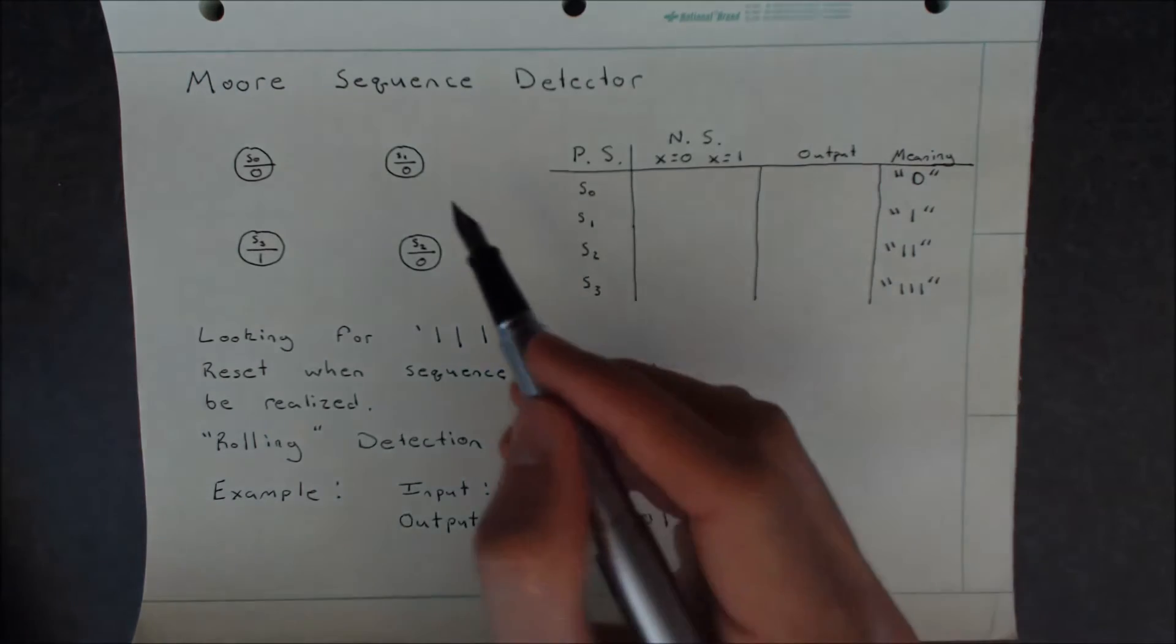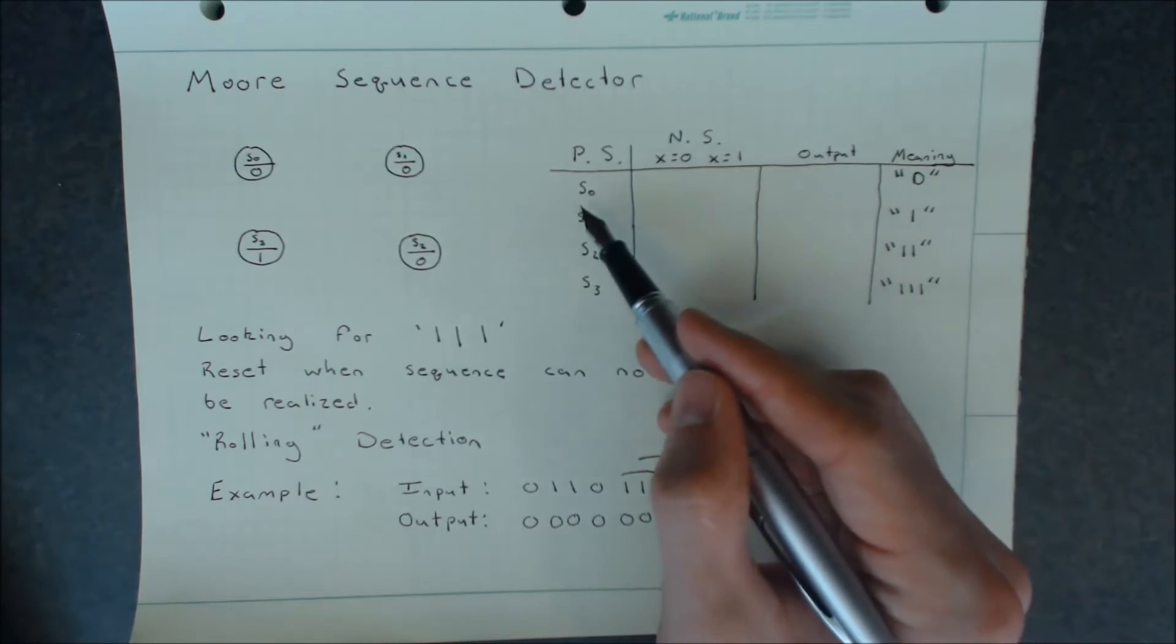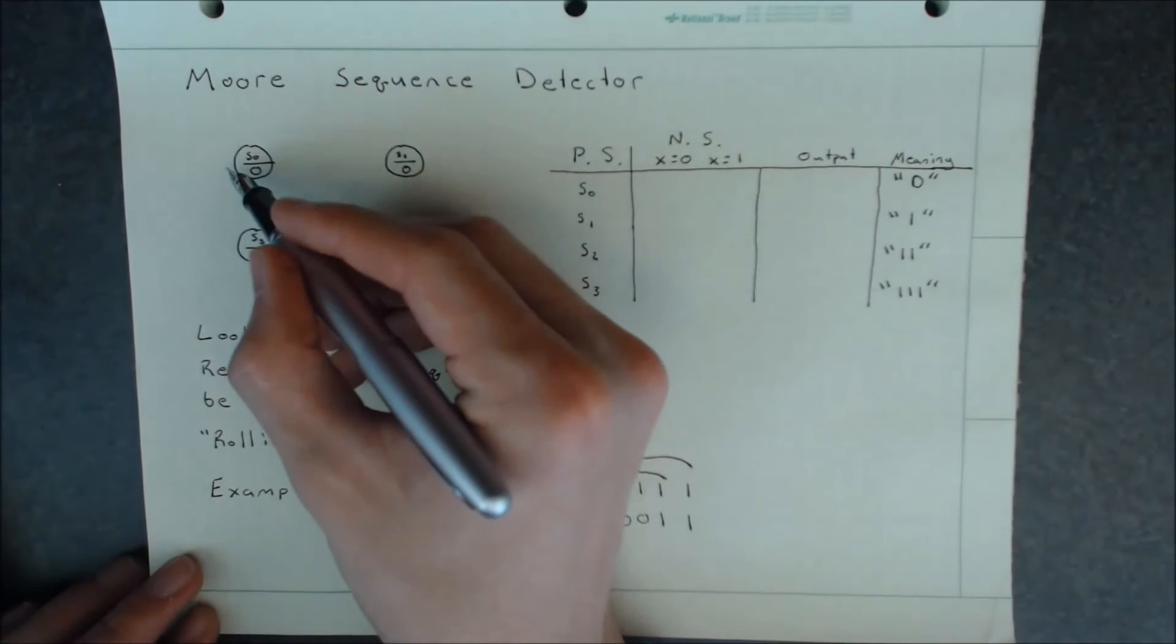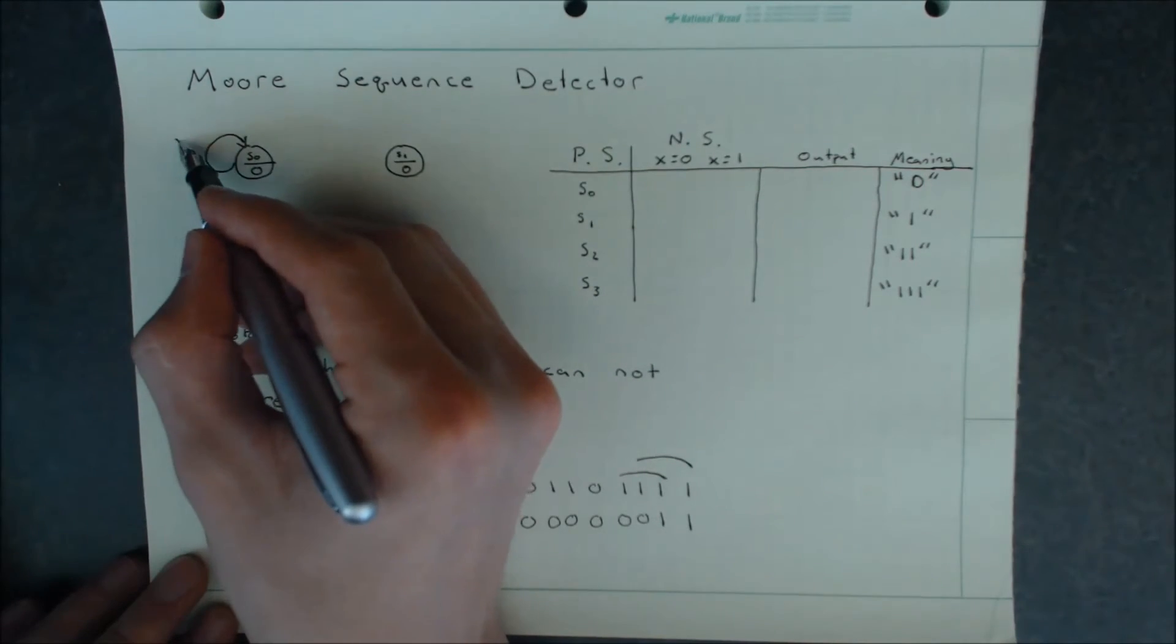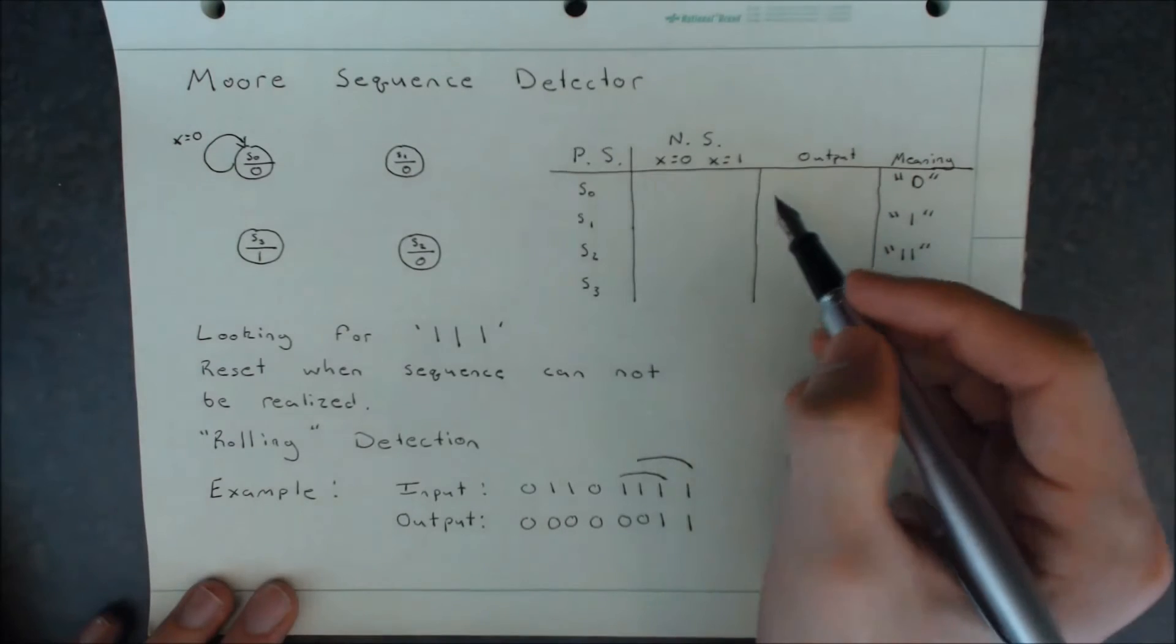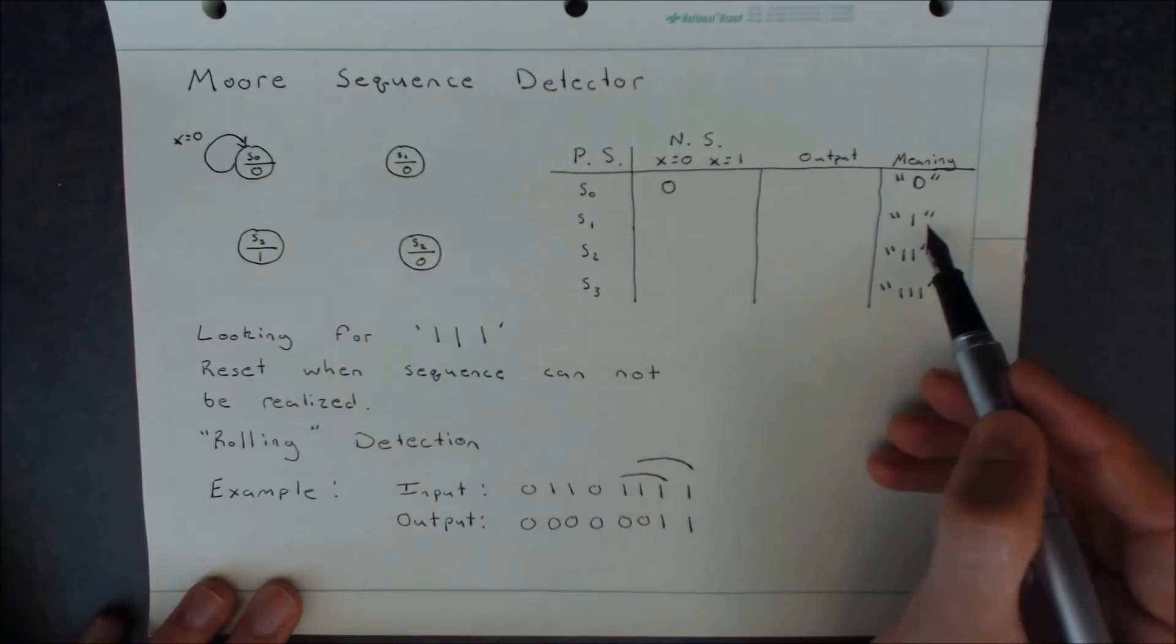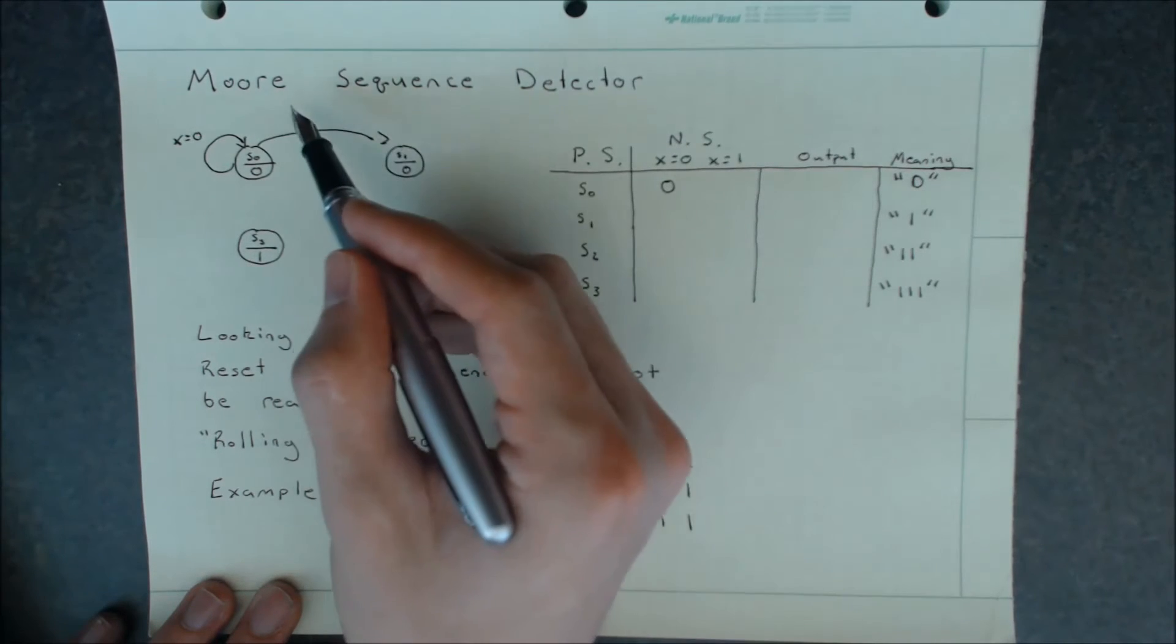If we get started, we have to first define what happens when we receive another 0 when we're in S0, which is our reset state. If we receive another 0, we'll simply stay in S0. We haven't gotten any closer to reaching the target of 1, 1, 1. However, if we receive a 1, we have gotten closer to 1, 1, 1, and we'll actually change to S1 on the input of x equals 1.